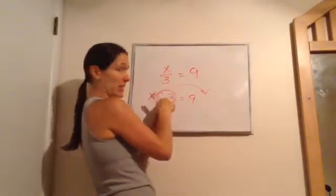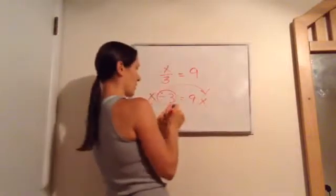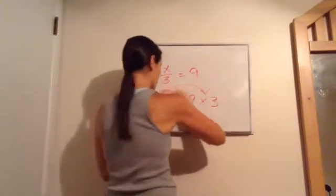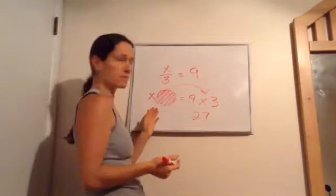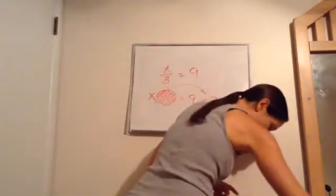So, the opposite of dividing is... Times. Timesing it, multiplying it, times 3. And so, we're done with that. And so, then x equals 9 times 3, which is 27. x is 27. All right. And last one.